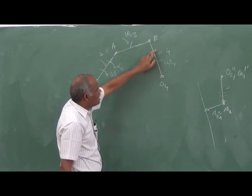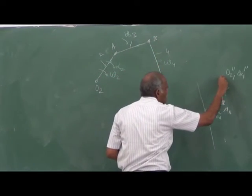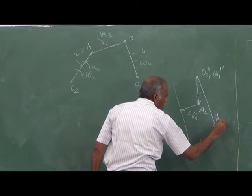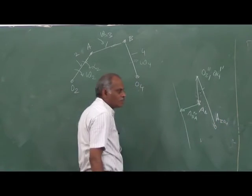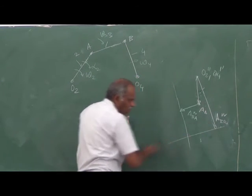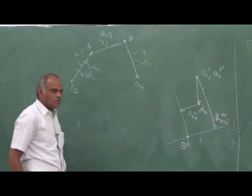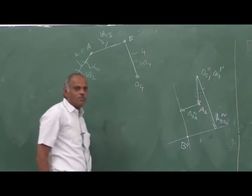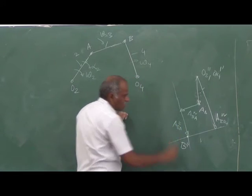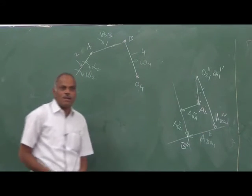Now consider B as part of linkage 4. It has a normal acceleration starting from O4, with magnitude O4B times omega 4 squared. The tangential component is perpendicular to that, magnitude unknown. Extending both tangential lines until they intersect gives point B double-dash. Connecting this with the reference point gives the acceleration of B. This is the acceleration of B with respect to A (tangential) and B with respect to O4 (tangential). This is how the acceleration diagram is drawn.